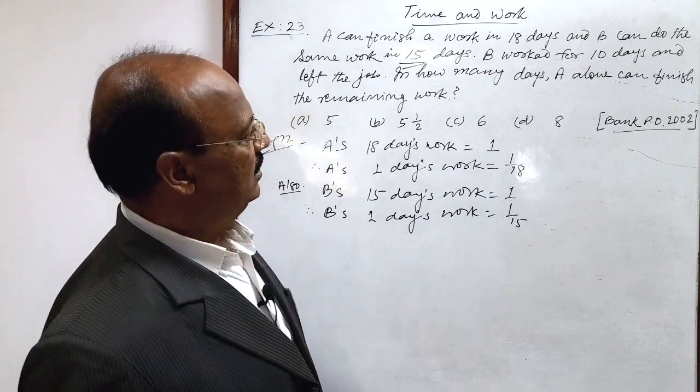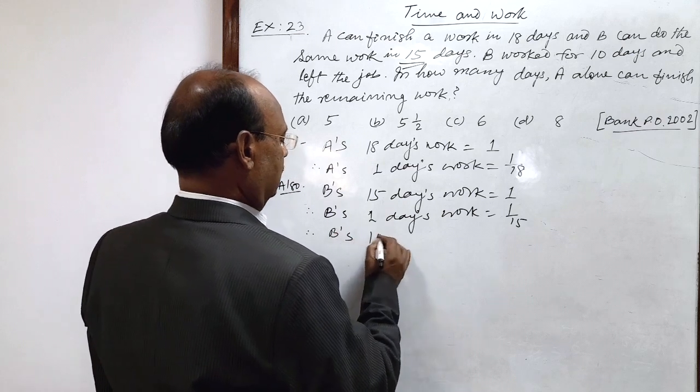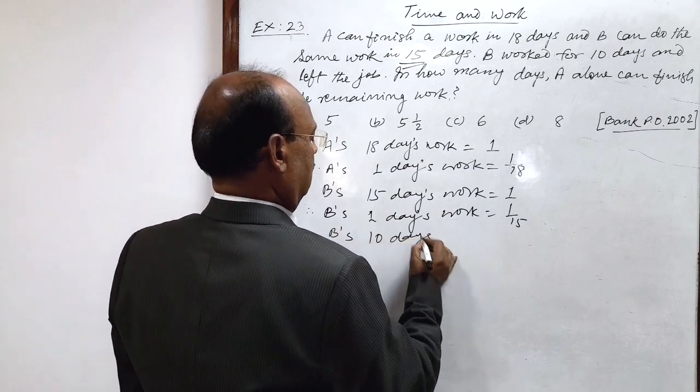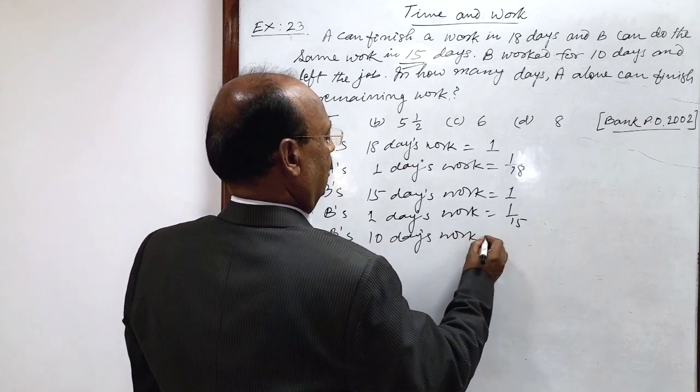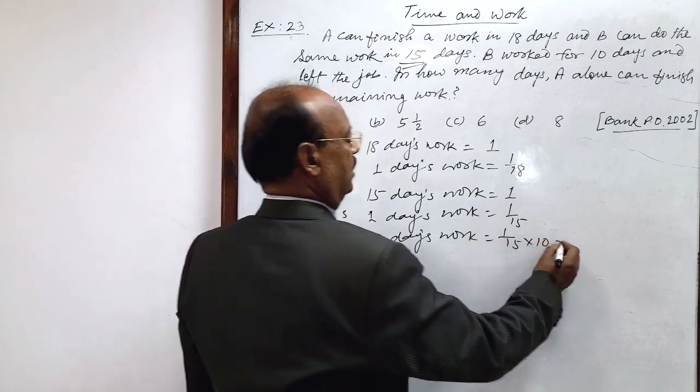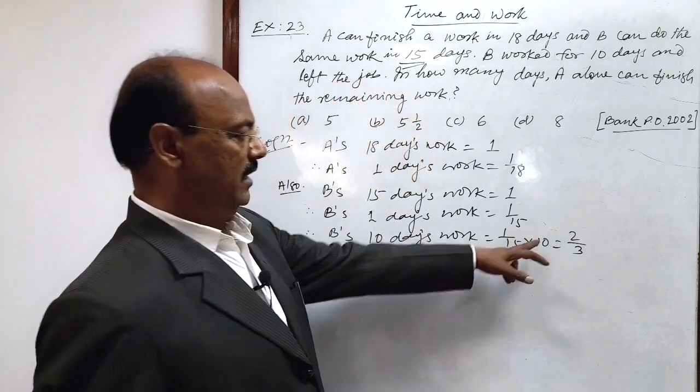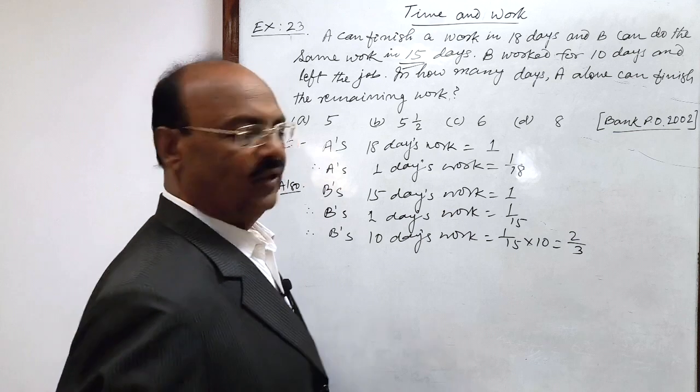How much work has he done in 10 days? Therefore, B's 10 days work: we multiply 1 by 15 by 10, and this is equal to 2 by 3 after cancellation with 5.